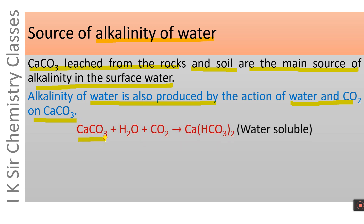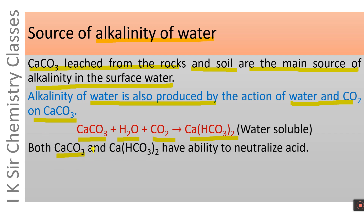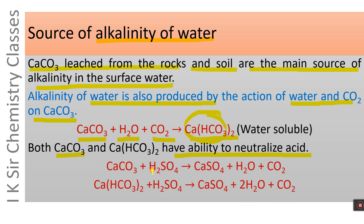CaCO3 reacts with H2O and CO2 forming water-soluble calcium bicarbonate. Both calcium carbonate and calcium bicarbonate have the ability to neutralize acid. Calcium carbonate reacts with H2SO4 forming CaSO4 plus H2O plus CO2. Similarly, calcium bicarbonate also reacts with H2SO4 forming CaSO4 plus 2H2O plus CO2. Thus, the alkalinity of a water sample is mainly due to the presence of calcium carbonate and calcium bicarbonate in it.